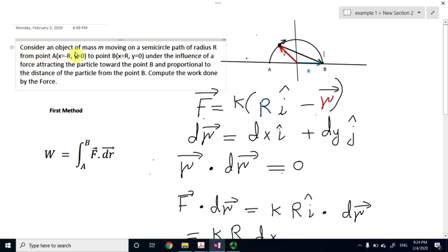consider an object of mass M moving on a semicircle path of radius R, capital R, from point A, which is on the negative x-axis, with x is minus capital R,